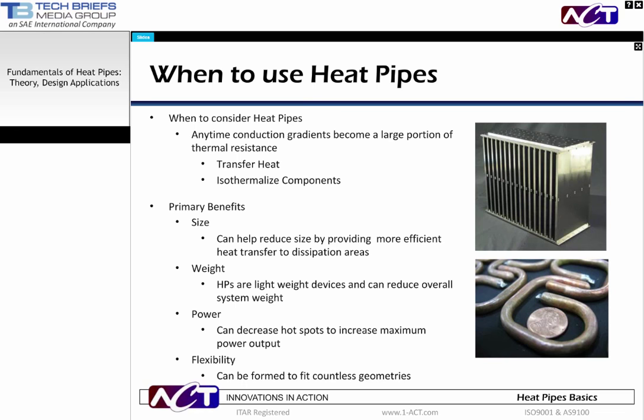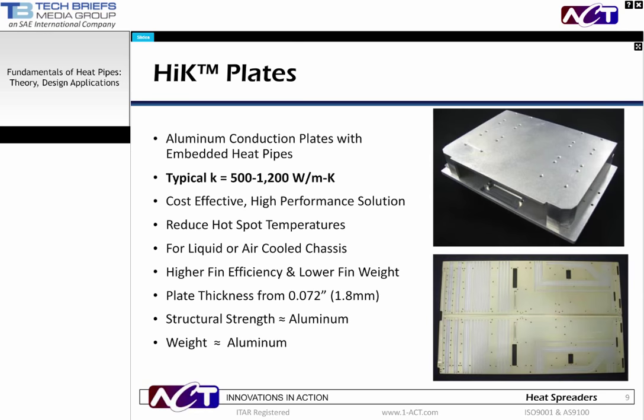So when should one consider using heat pipes? Essentially, anytime high conduction gradients are a major portion of the thermal resistance. Heat pipes can be used to transfer heat and isothermalize components. Heat pipes can reduce the thermal management system size by providing more efficient heat transfer, reduce system weight — since they are evacuated metal tubes which are lighter than similar size metal rods — and reduce required power, as heat pipes themselves require no power to operate and can reduce system hotspots. Heat pipes can be formed to fit countless geometries; the typical bending radius is three times the outside diameter and they can be flattened to two-thirds the outside diameter.